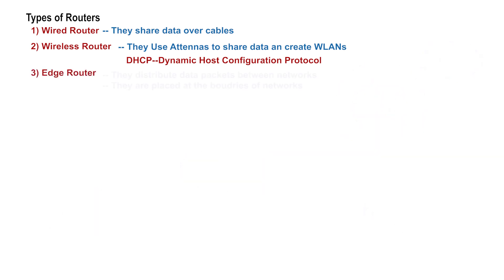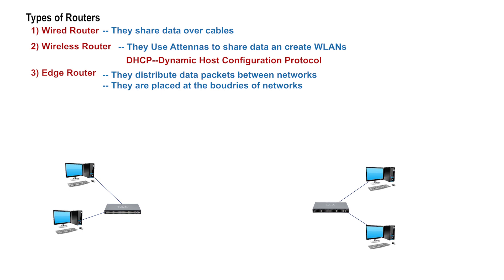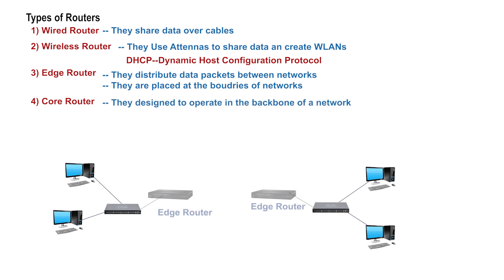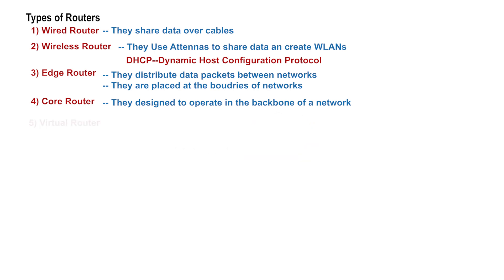Third, edge routers. This can be either a wired or wireless router that distributes data packets between networks but not within a network. As their name indicates, edge routers are placed at the edge or boundary of networks and typically connect to internet service providers. Fourth, core routers. A core router is a router designed to operate in the internet backbone. They are designed to be the backbone of your network and do the heavy lifting of data transfer. Fifth, virtual routers. These are pieces of software that allow computers and servers to operate like routers, sharing data packets just as physical routers do.